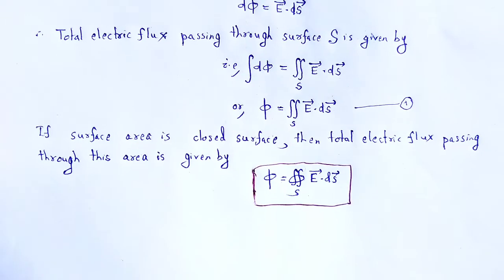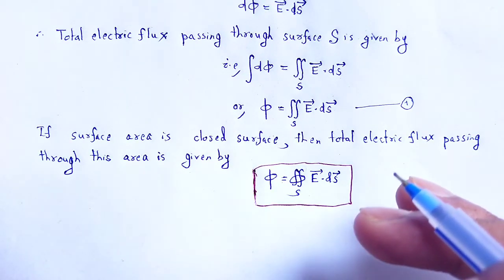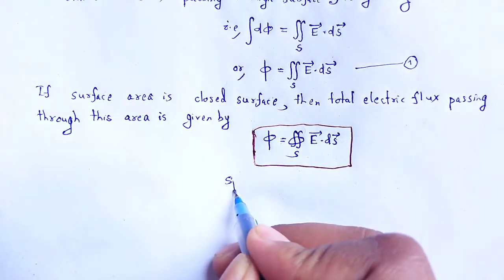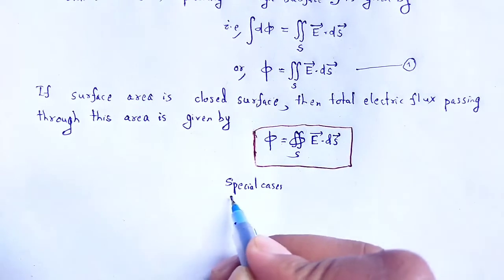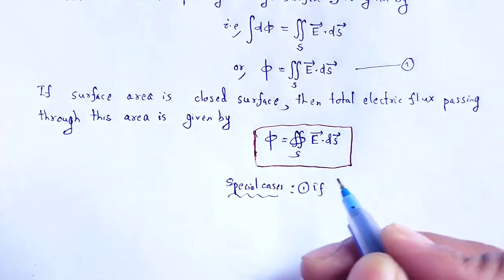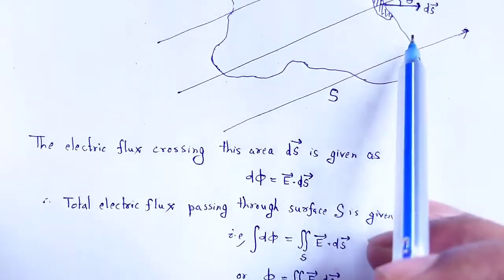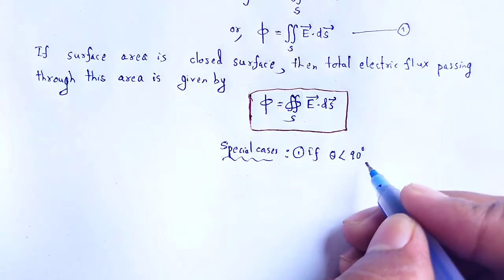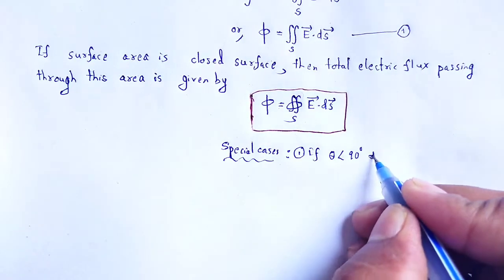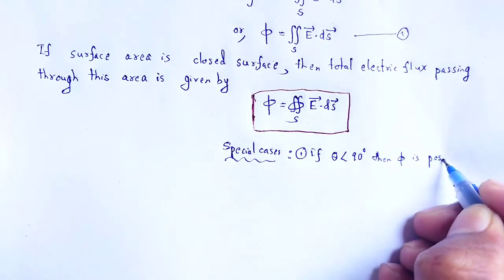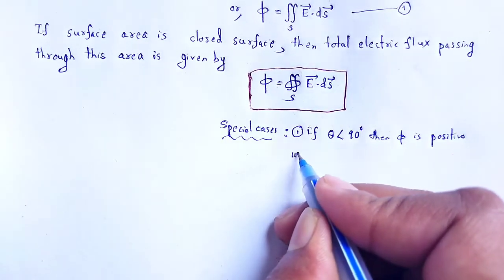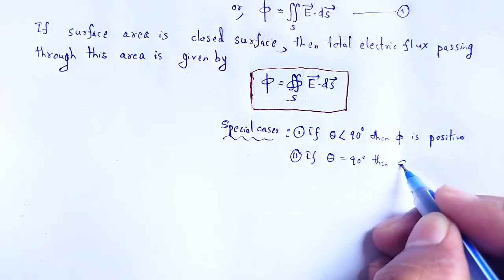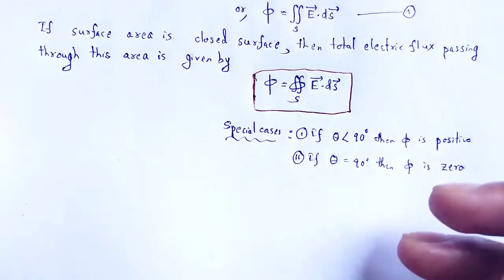Now the total flux passing through a closed surface has various special cases. If the angle between dS and E is theta and theta is less than 90 degrees, then the flux is positive — phi is positive. Similarly, if theta is equal to 90 degrees, then the flux is zero — there will be no electric lines of force passing through the closed surface.